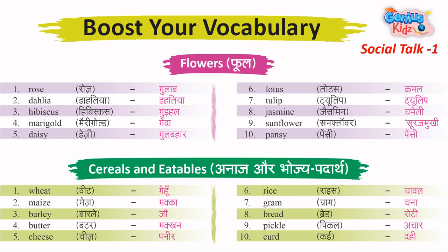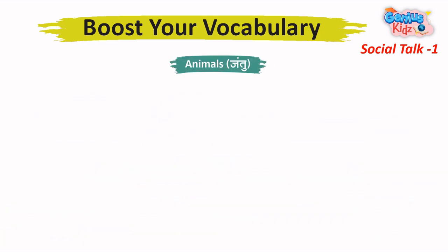6. Gram – Chana. 7. Corn. 8. Curd – Dahi.